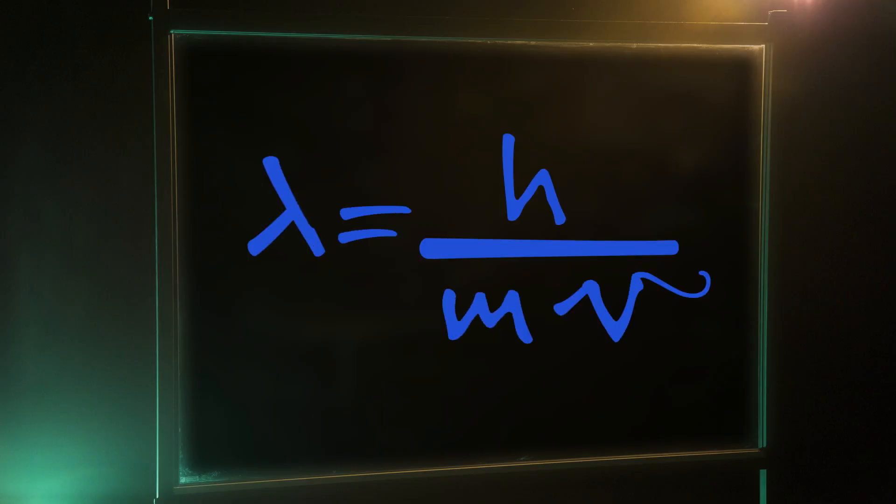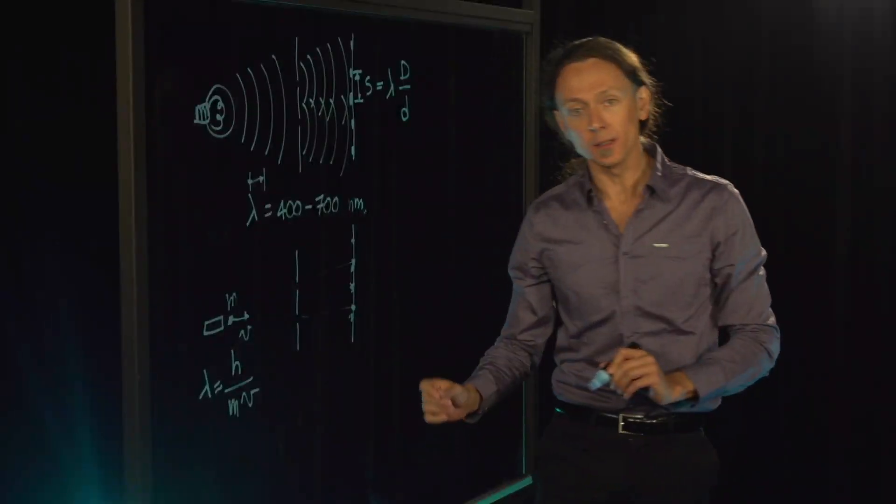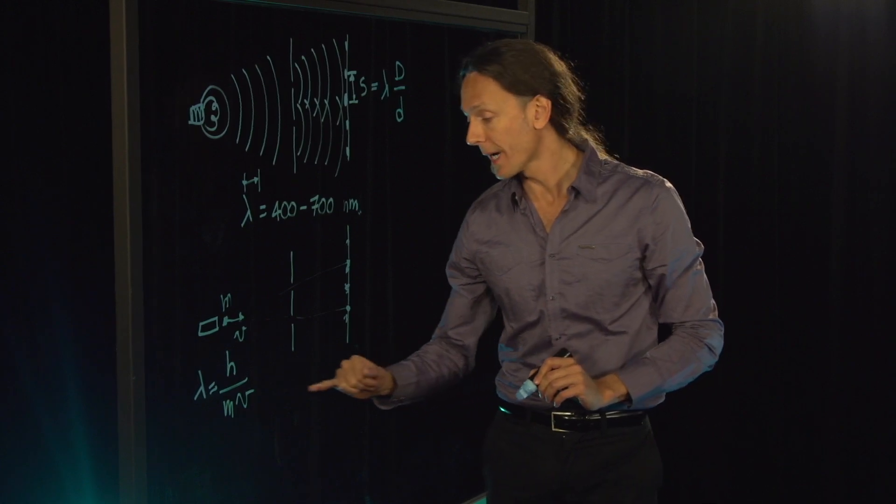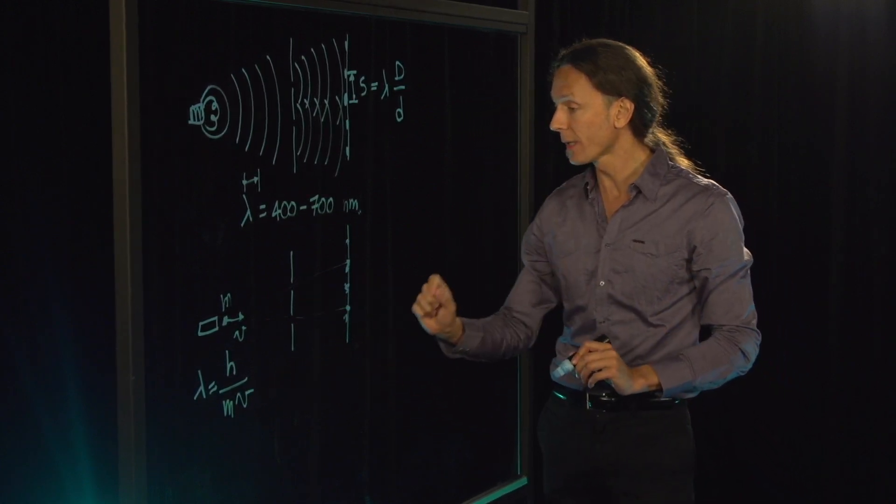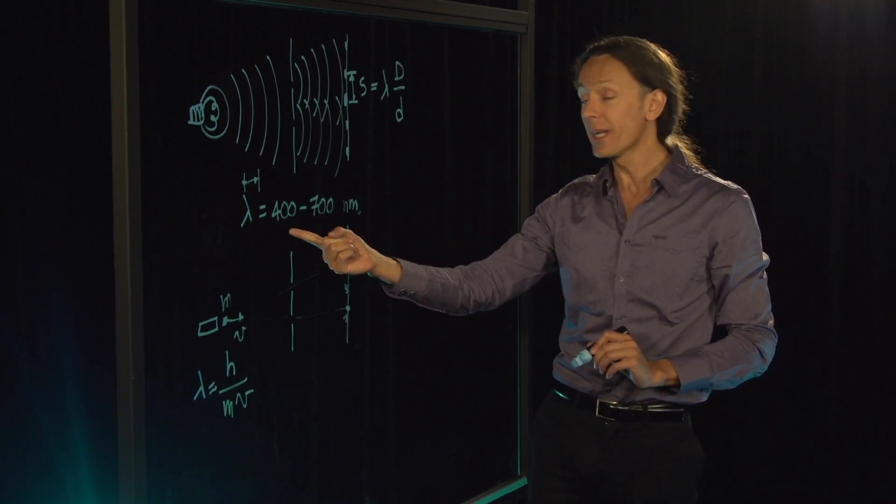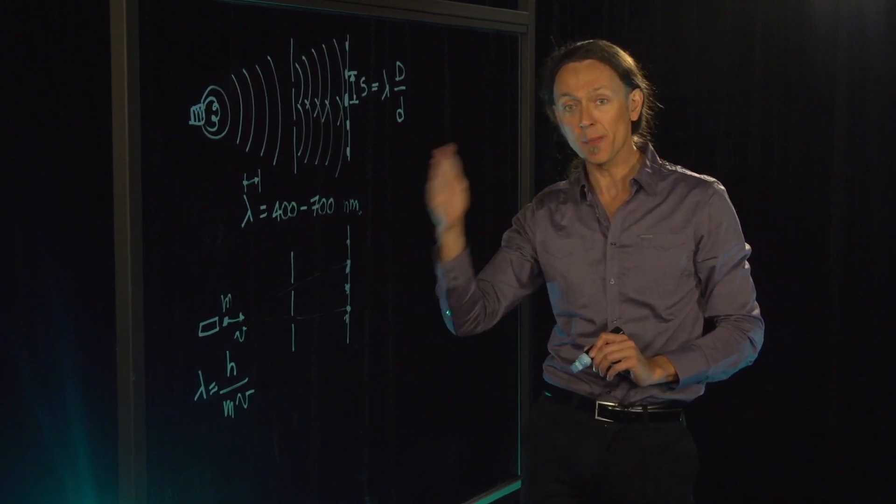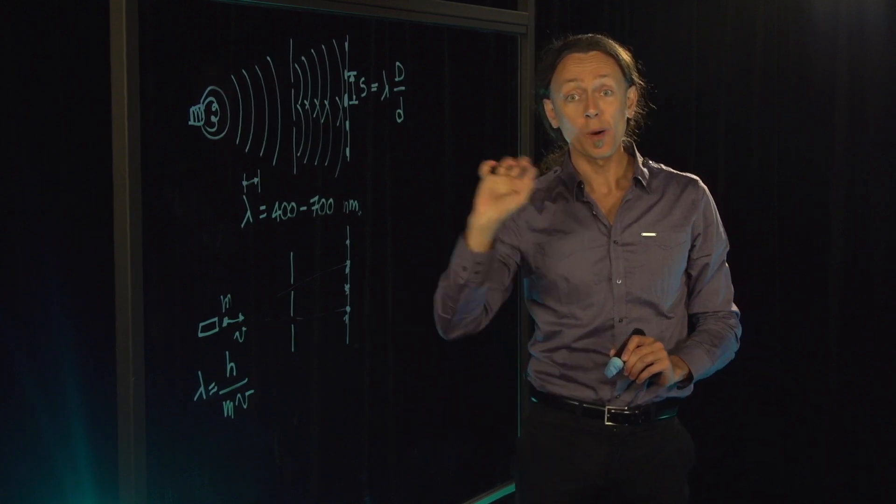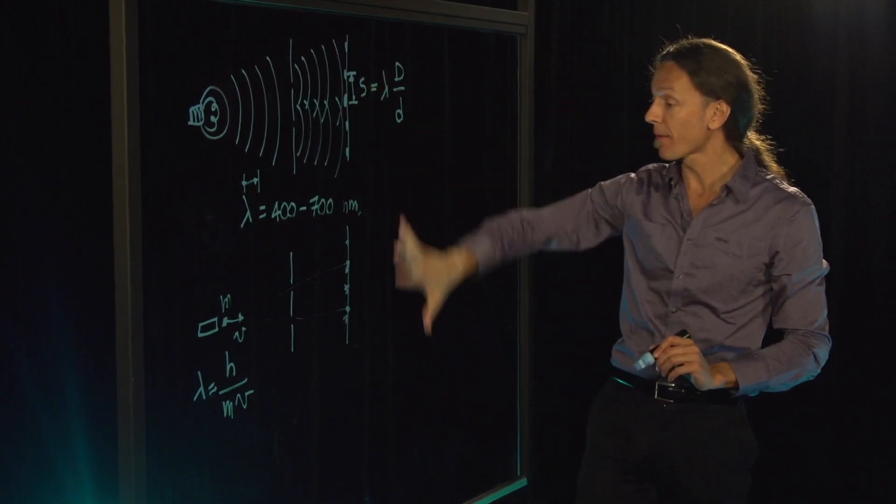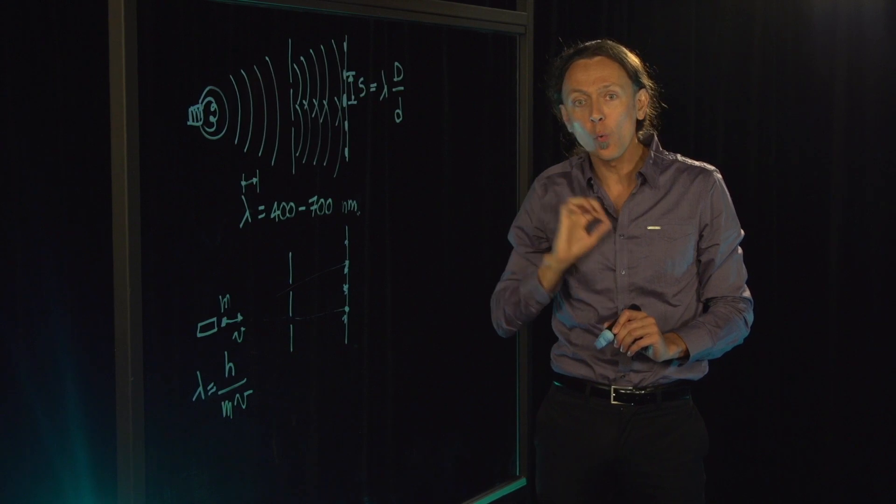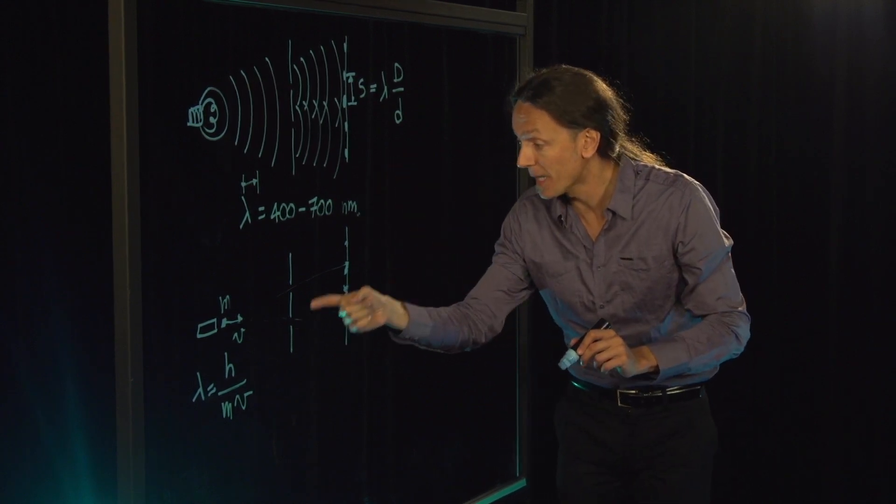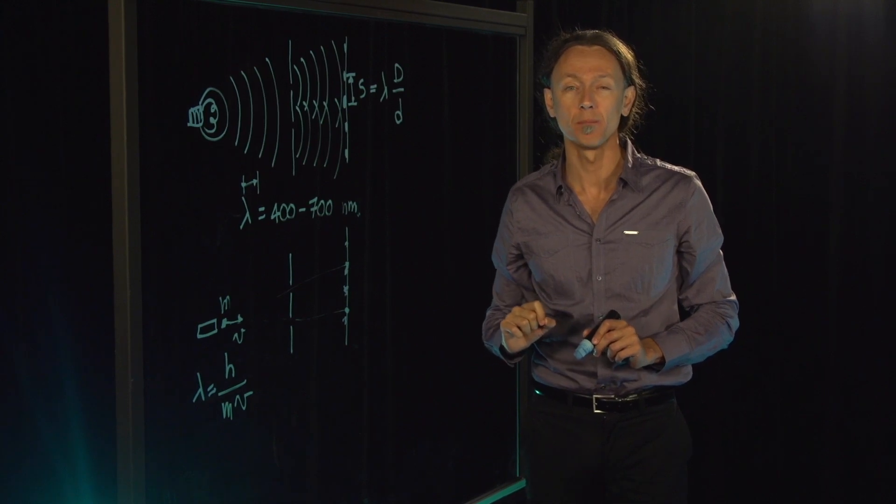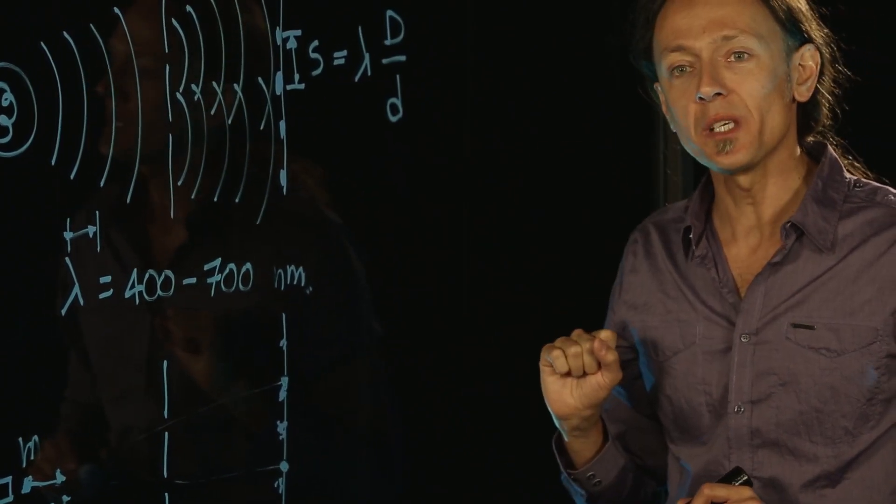The formula for the wavelength tells you the wavelength is the Planck constant, the fundamental constant of quantum mechanics, divided by the mass times the velocity. In this case, for the proton, you will get a 400 nanometer wavelength, which is the same as violet light, with a velocity of one meter per second. So with the same apparatus, you can see the quantum interference of a proton, which means the proton has been in two places at the same time.